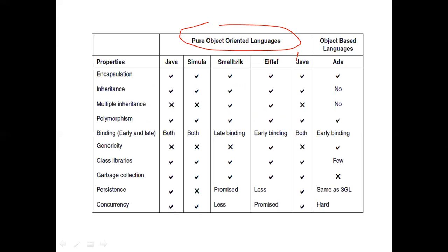The pure object-oriented languages are Java, Eiffel, Smalltalk, and Simula. These four languages are pure object-oriented languages. That means it is completely object-oriented — not a non-pure or procedure-oriented language. It is completely object-oriented, and at least one class is required to write any program. In Java, for example, there is at least one class in every program. Java, Simula, Smalltalk, and Eiffel are all pure object-oriented languages.